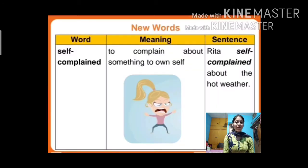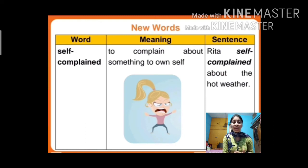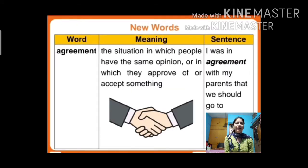In Whole Words we will learn some new words, their meaning, and sentence examples. The first word is 'self-complaint.' Self-complaint means to complain about something to oneself. A sentence can be: Rita self-complained about the hot weather. The next word is 'agreement.' Agreement means the situation in which people have the same opinion.